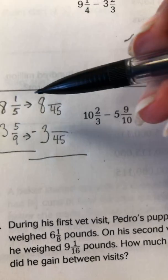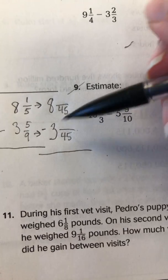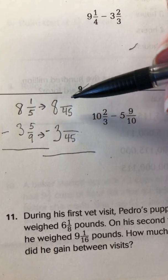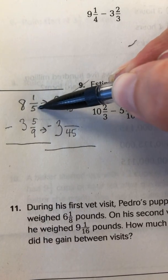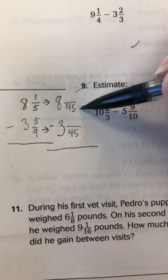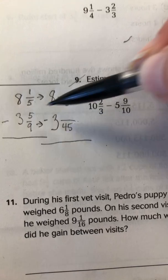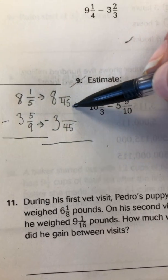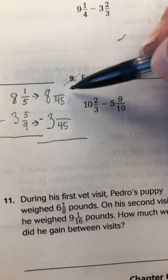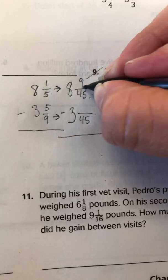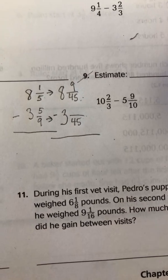So now we have 8 and something over 45 minus 3 and something over 45. So we have to figure out our new numerators. So ask yourself, what did I do to the 5 to get 45? You multiplied it by 9. So since 5 times 9 is 45, I also have to multiply the 1 times 9. So 1 times 9 is 9. So this becomes 8 and 9/45.